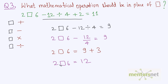Since 2 times 6 is 12, a multiplication sign should go in this box. Other operations do not work because nothing yields 12 other than 2 times 6. So the correct answer to this question is multiplication.